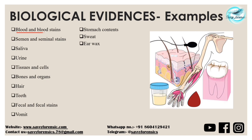Examples of biological evidence include blood and blood stains. We have to keep in mind that these evidences could be from animal as well as human origin. Other examples include semen and seminal stains, saliva, urine, tissues and cells, bones and organs, hair and fibres of plant origin, fecal matter and fecal stains, vomit, teeth — which are also very potential biological evidence — stomach contents, sweat, and earwax.